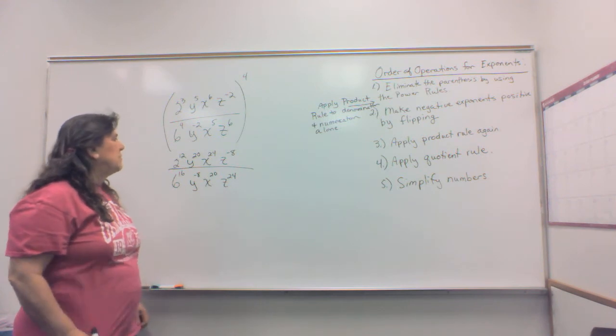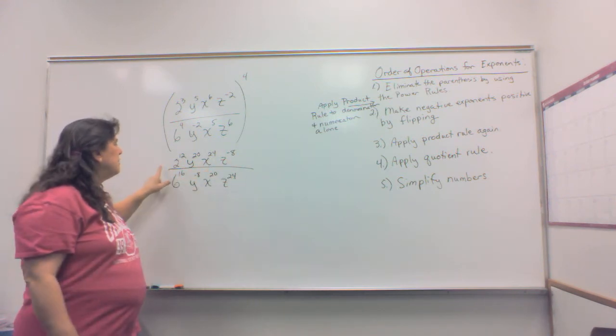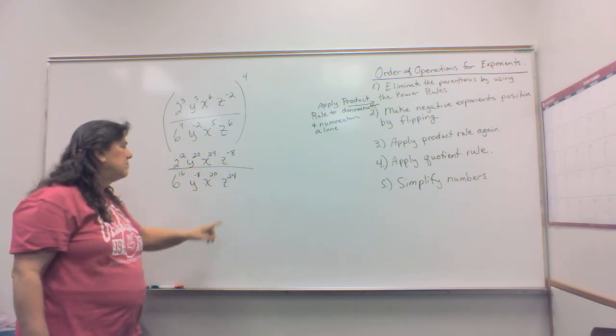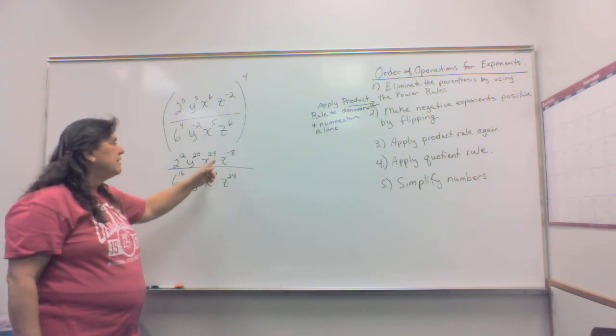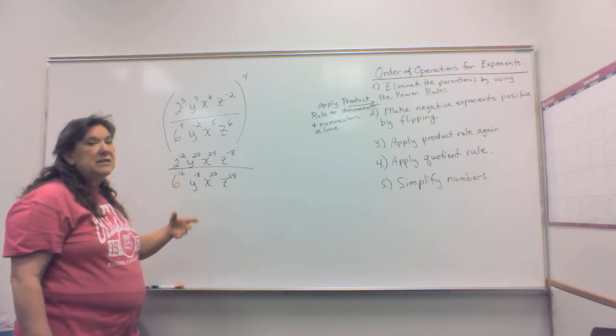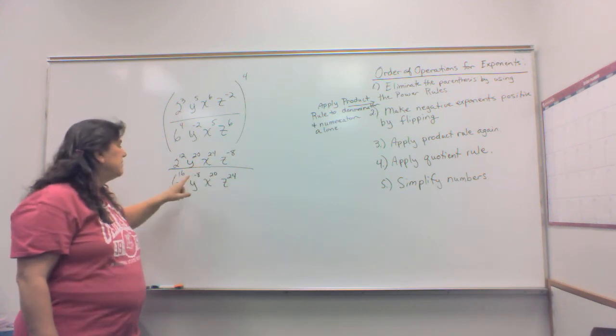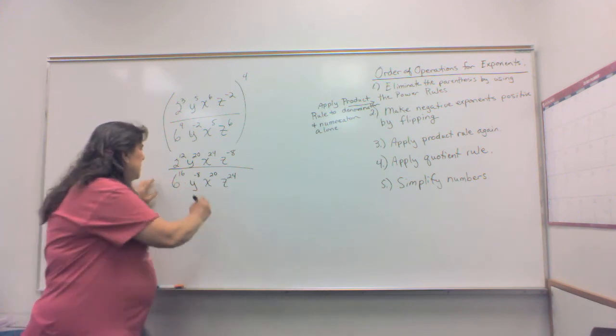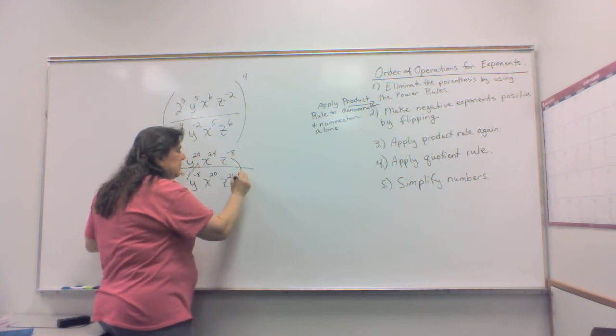So we do not have anything on top that has more than one of the same bases, the same on the bottom. Now, on this one, we might want to flip all our negative exponents. Or, if it doesn't bother you and you're not afraid of losing your negatives, we can go ahead and work with them that way. I think we'll flip it. So this one's going to flip up, and this one's going to flip down.